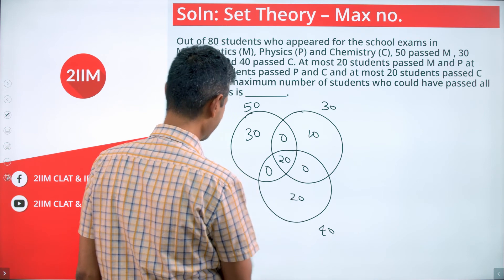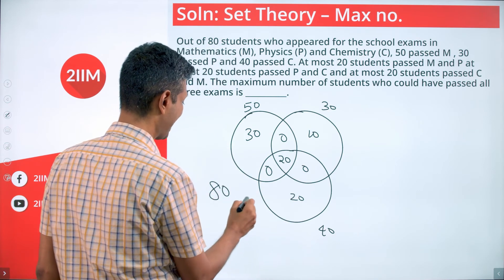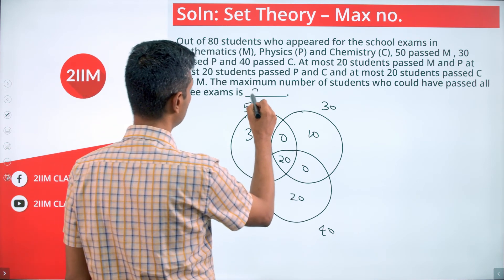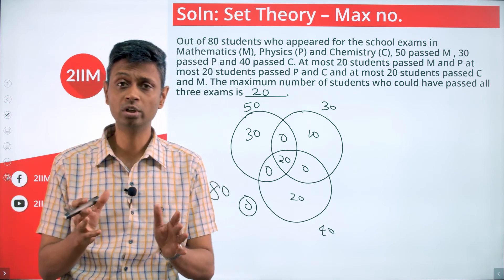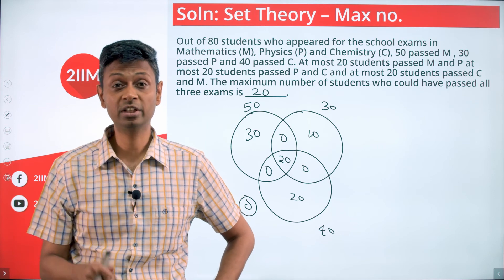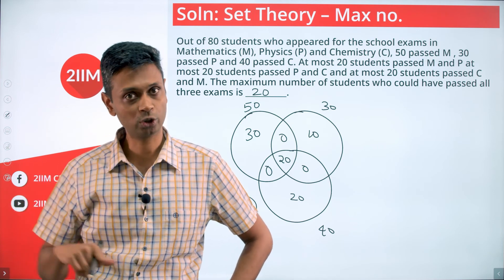30 plus 10 is 40, plus 60 is 80. Total is 80, 0 outside. Everything works. The maximum is 20. Lovely question. Just manipulate based on that one rule in set theory, move numbers a little bit, think about the maximum possible, and you're good to go.